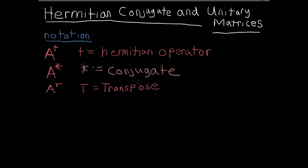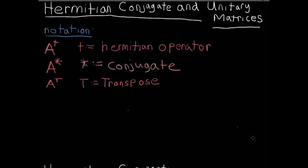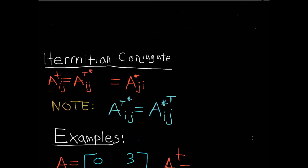The Hermitian conjugate is sometimes called the Hermitian adjoint. The Hermitian conjugate is defined as follows: you take the ij-th component of your matrix A being Hermitian conjugated, and what it does is it transposes the ij-th element and then complex conjugates it. You can do it either way — either complex conjugate then transpose, or transpose then complex conjugate.